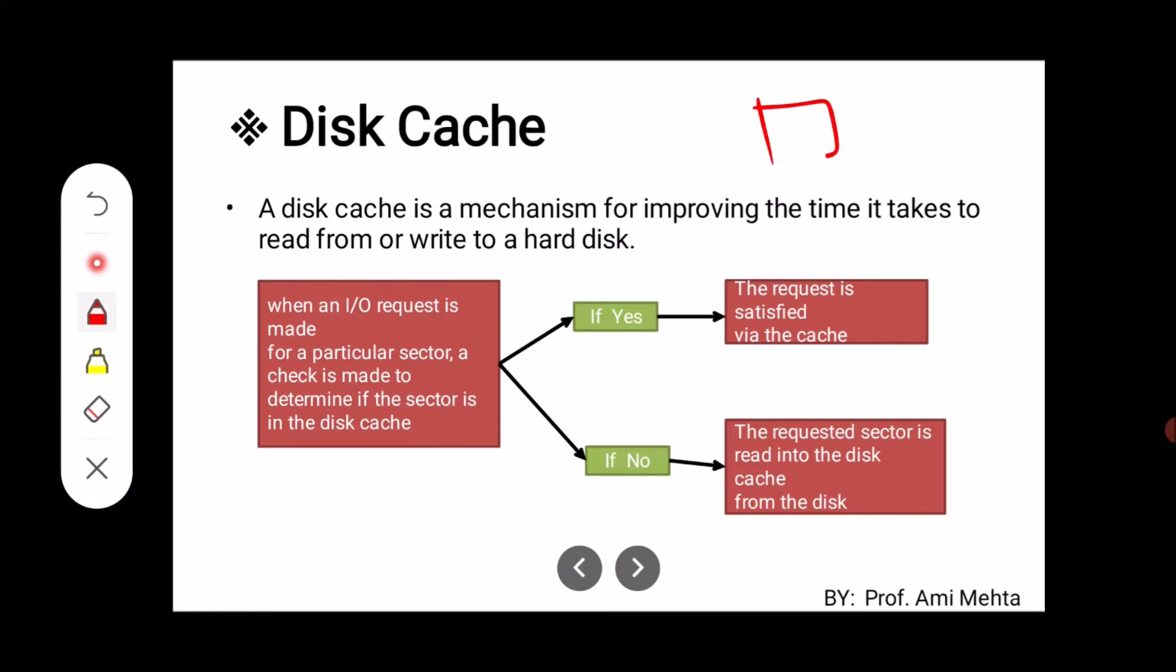For example, this is a hard disk. We want to read data from the hard disk or write data into hard disk, and this is the mechanism for improving the time of reading and writing. What we can do? First of all, let us understand.